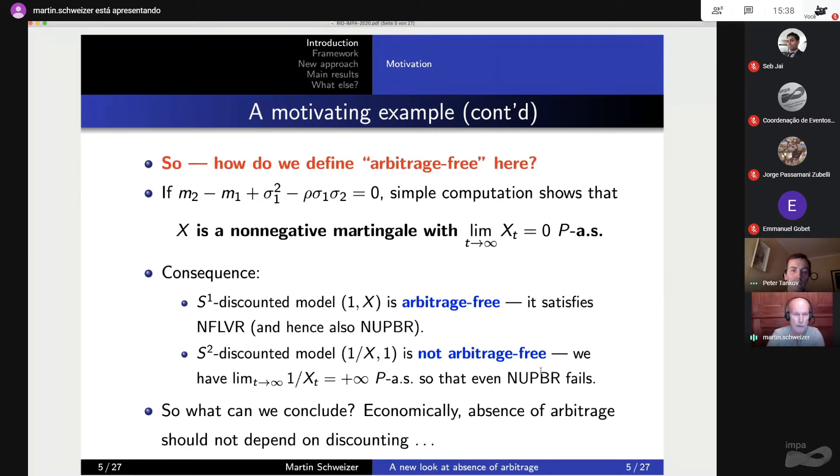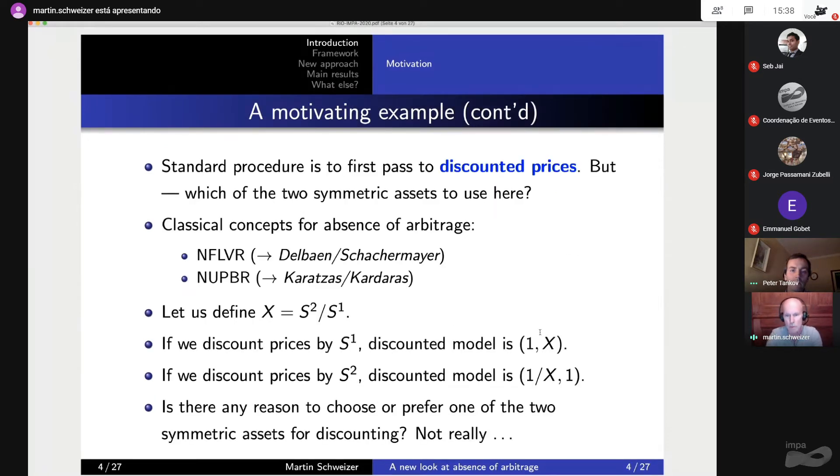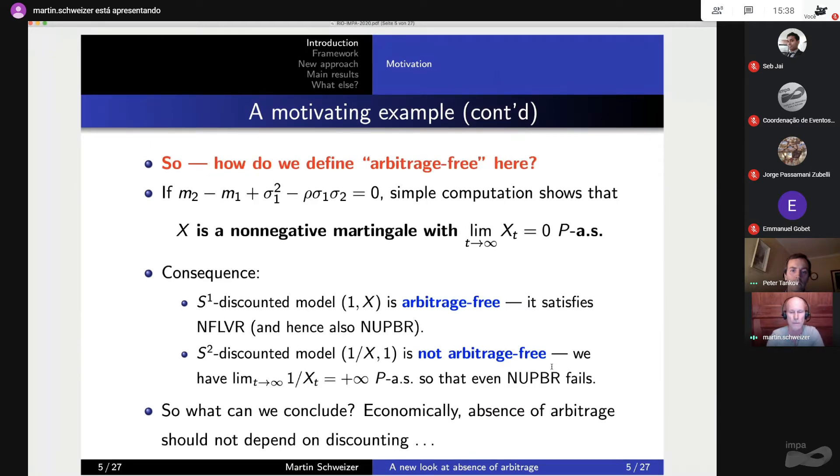But if you then look at the other model, the S2-discounted model, this is not arbitrage-free at all, because its first coordinate, 1 over x, explodes to plus infinity. So even the weaker condition, NUPBR, fails. And what can we conclude then? I mean, we really are looking at the symmetric model, and if we discount in one way, we would say, happily, this is arbitrage-free. If we discount with the other asset, we would say, absolutely not, this is far from being arbitrage-free. But somehow, absence of arbitrage should not really depend on discounting. So what's going on here?